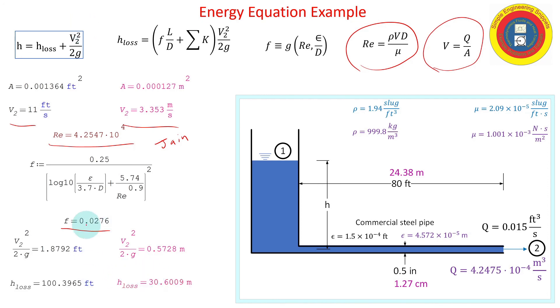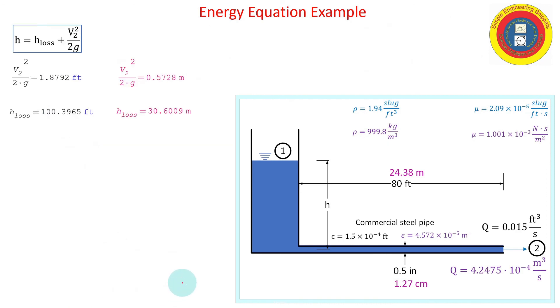And now I can plug into my head loss equation. Here it is up here at the top, and obtain the values in both feet and meters. And we're about done because now all that's left is to add these terms, and I obtained my final answer. So to support this flow rate I am going to need 102.3 feet of water, or equivalently 31.2 meters of water.